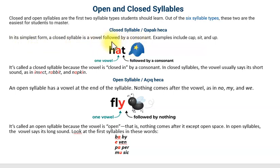Vowel means sait, consonant means samit. Examples include cap, sit, and up. Closed syllable-da sait səsdən sonra samit səs gəlməlidir, yəni heca samit səslə bitməlidir. One vowel in hat followed by a consonant. It's called a closed syllable because the vowel is closed in by a consonant.